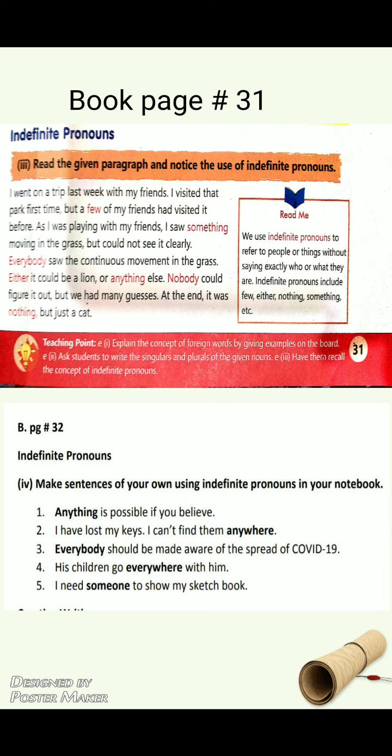Number two: 'I have lost my keys, I can't find them anywhere.' 'Anywhere' means koi bhi jagah, kahi bhi — again not specifying a place. Number three: 'Everybody should be made aware of the spread of COVID-19.' 'Everybody' means tamam log, har ek banda. It is generalized — there is no specific, exact reference.